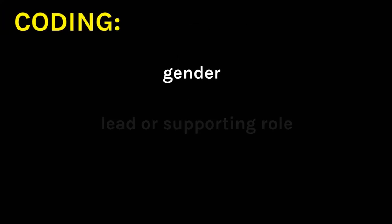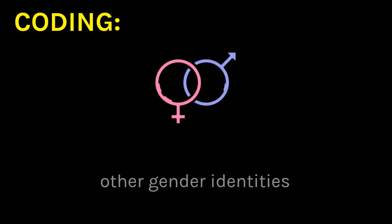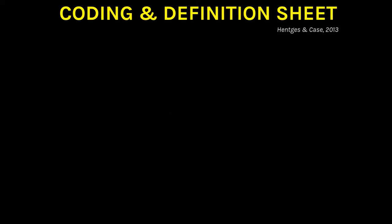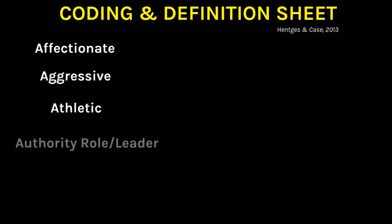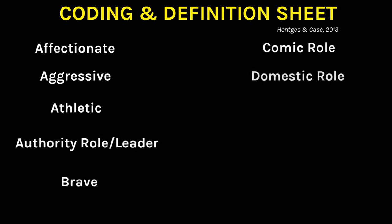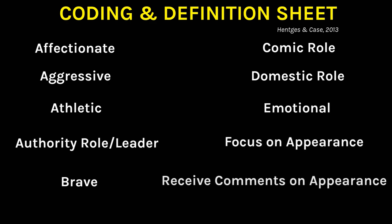Characters were coded for their gender, role in the story, and behaviors. This research specifically focused on male and female characters, omitting non-binary and transgendered characters as there were few to none who identified as such. A coding and definition sheet from previous literature containing commonly observed gender stereotypes was used to code the episodes. The characteristics coded were: affectionate, aggressive, athletic, authority role or leader, brave, comic role, domestic role, emotional, focus on appearance, and receiving comments on appearance. As coding progressed, the characteristic of intelligence was frequently observed and was therefore added to the coding sheet.